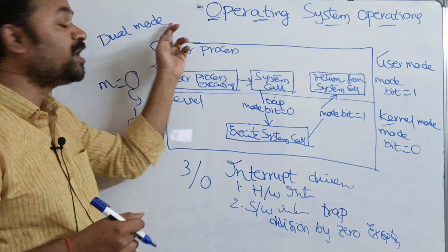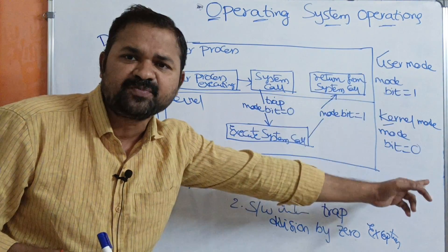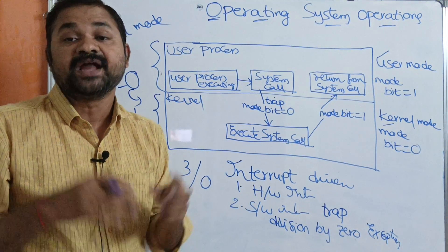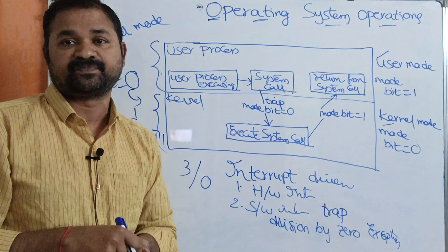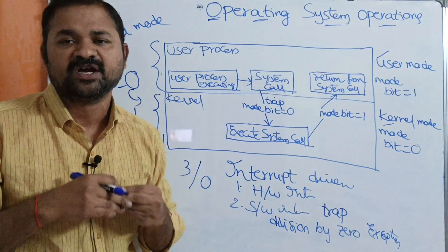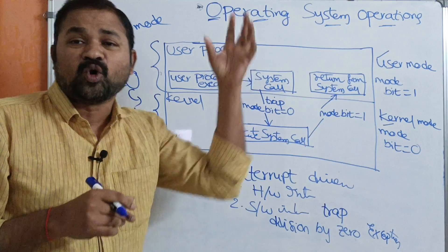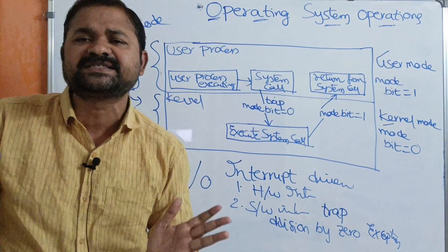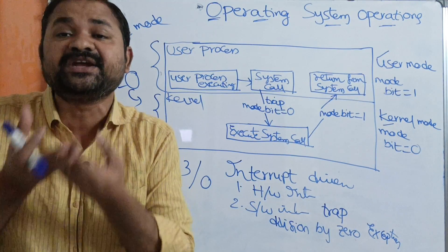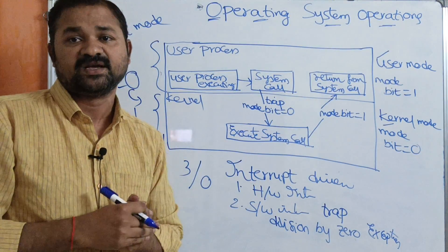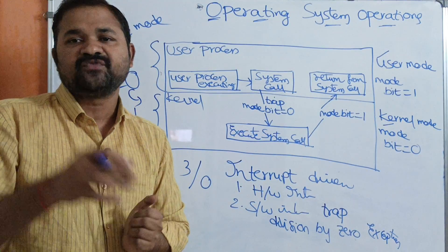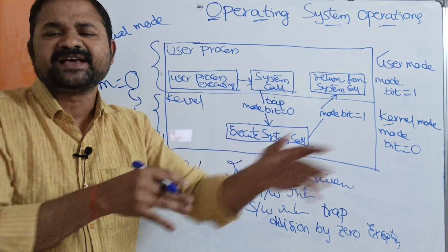This is the dual mode operation: first is user mode, second is kernel mode. Why are these two modes needed? In order to protect the code of the operating system — because the operating system contains the most important and most privileged instructions. A user process cannot access the operating system directly. We must provide security to the operating system from user processes, which is why we use the mode bit.